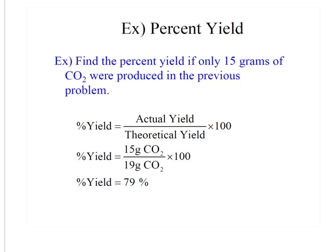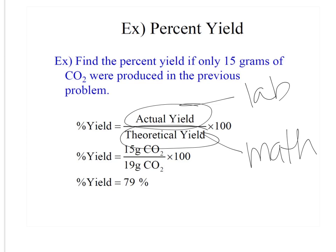So here's your equation for your percent yield. Find the percent yield if only 15 grams of carbon dioxide were produced in the previous problem. So this is your actual yield, like this is what you would get if you're doing the lab. Your theoretical yield is what you get when you do the math from the balanced chemical equation. That's your stoichiometry.